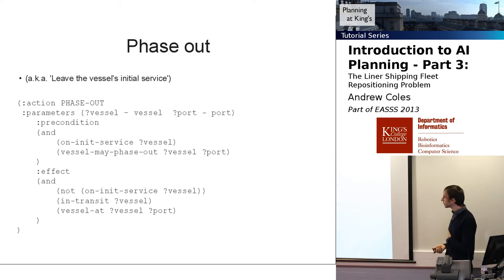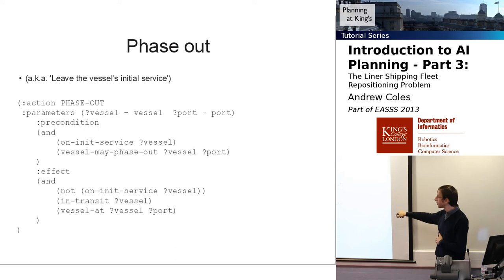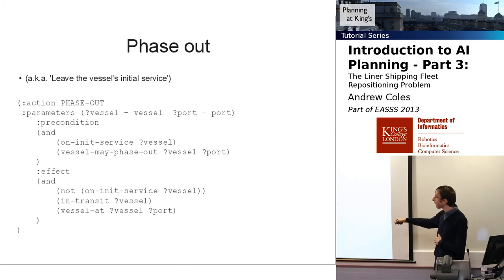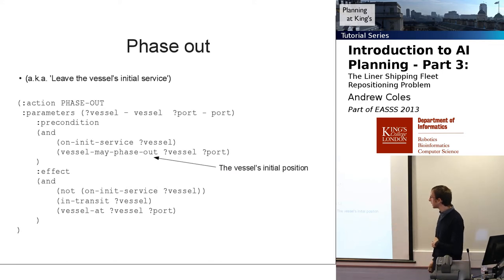Let's look at the actions. Phase-out — otherwise known as leaving the vessel's initial service — has preconditions that the vessel is on its initial service and hasn't phased out yet. We also have a precondition that the vessel may phase out at that port. When we apply this action, the vessel is now at that port, so we can start to sail and manipulate it. We also mark that it's in transit.